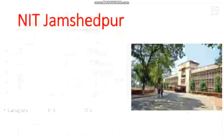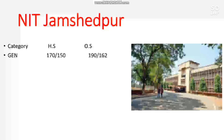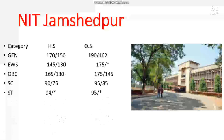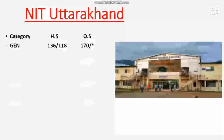Here is the cutoff — marks required: for general, 190 marks; EWS, 175; OBC, 175; for SC it is 95; and ST, 95. The next is NIT Uttarakhand. Here the marks required for general are 170.